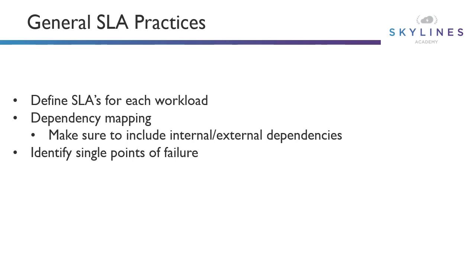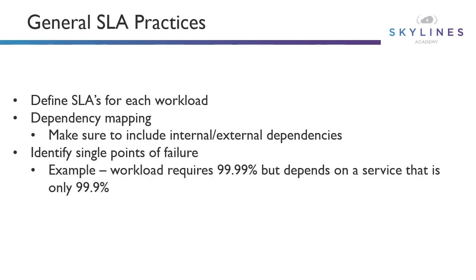Identify single points of failure. One item in the whole stack could cause your whole SLA to change. For example, you have a workload that requires four nines availability — 99.99% — but it depends on a service that is only available 99.9% of the time. That's going to change your SLA overall.